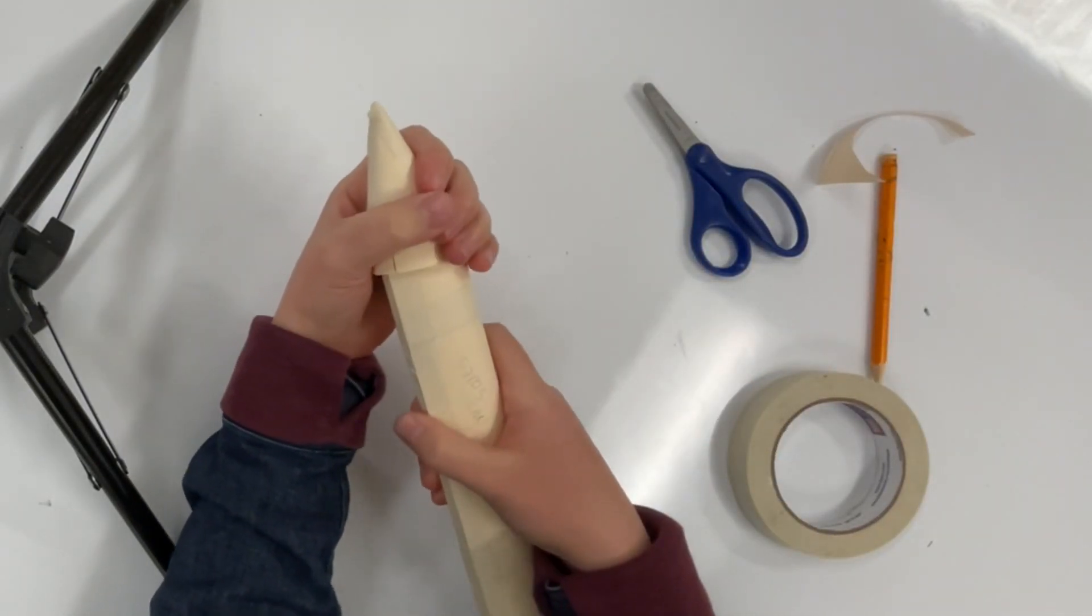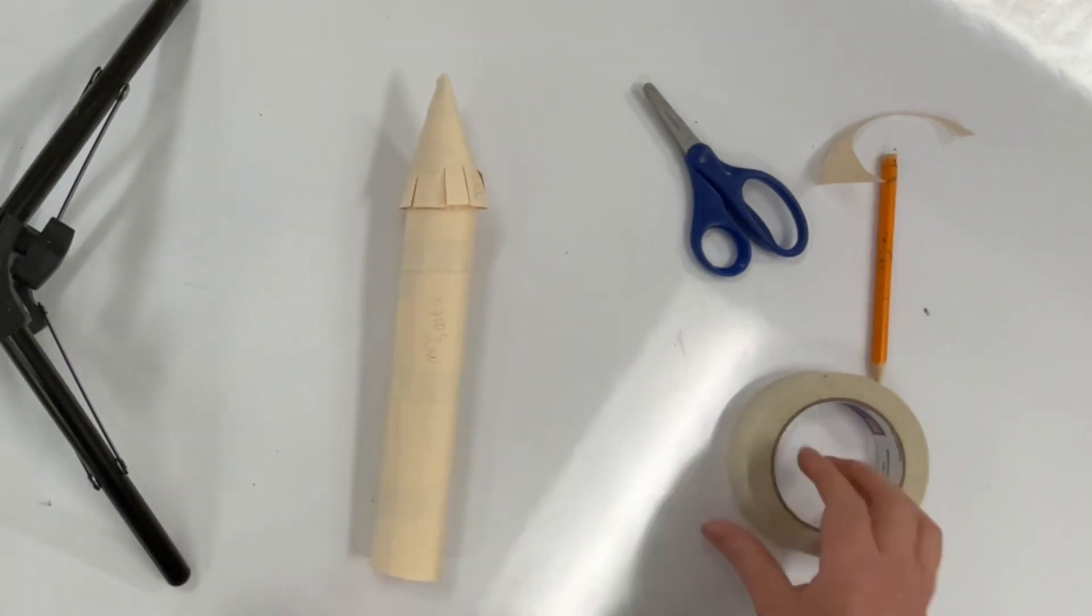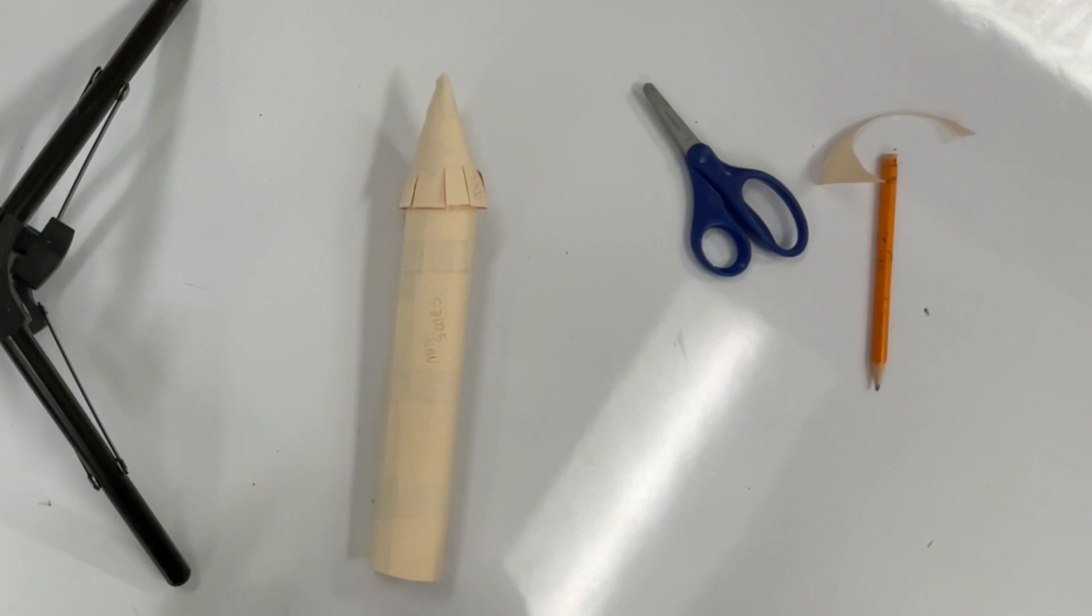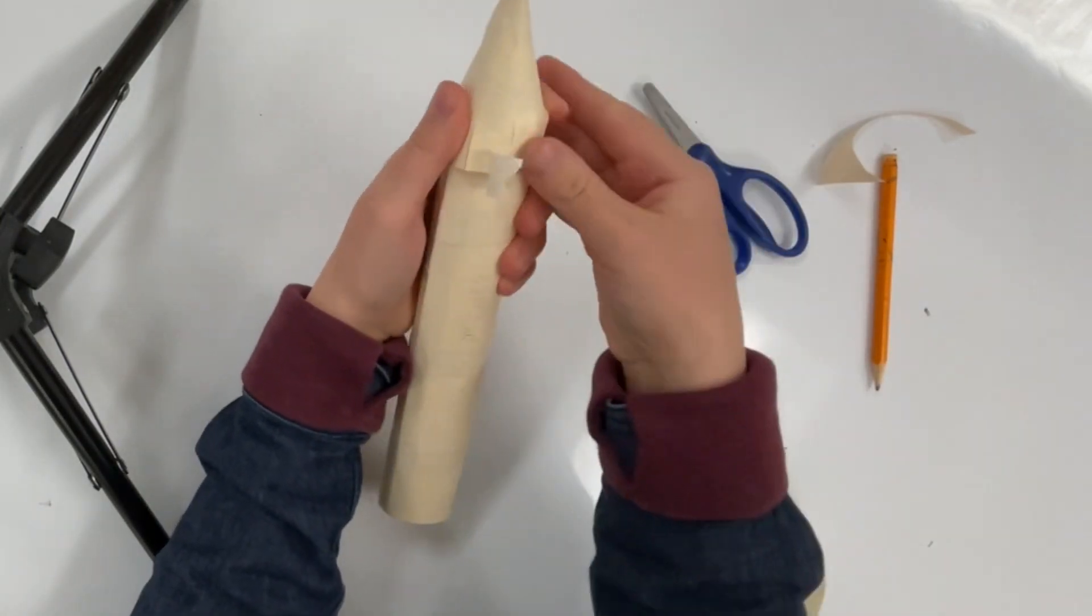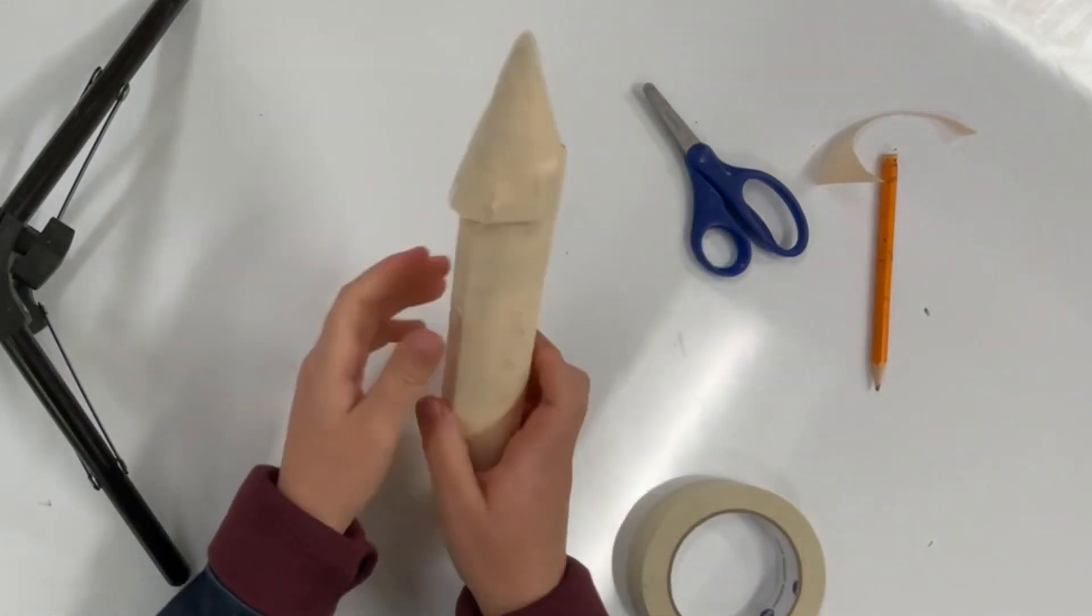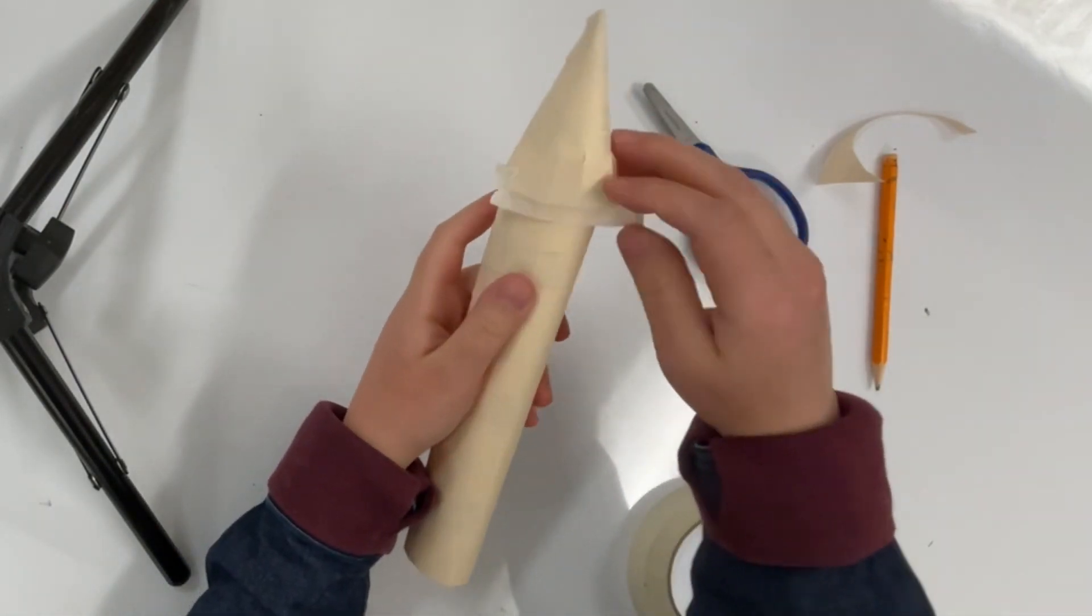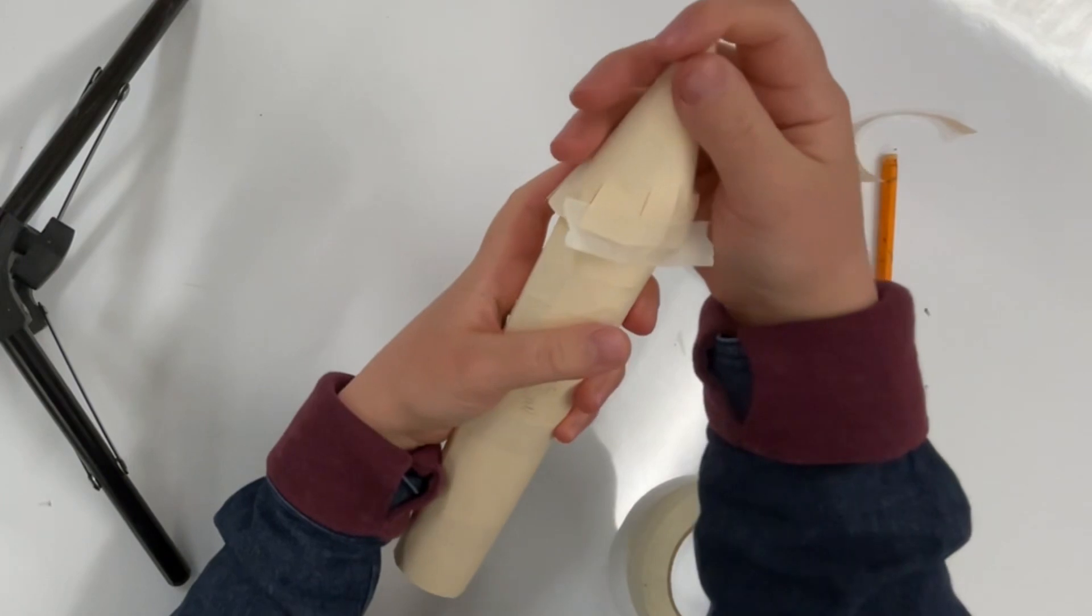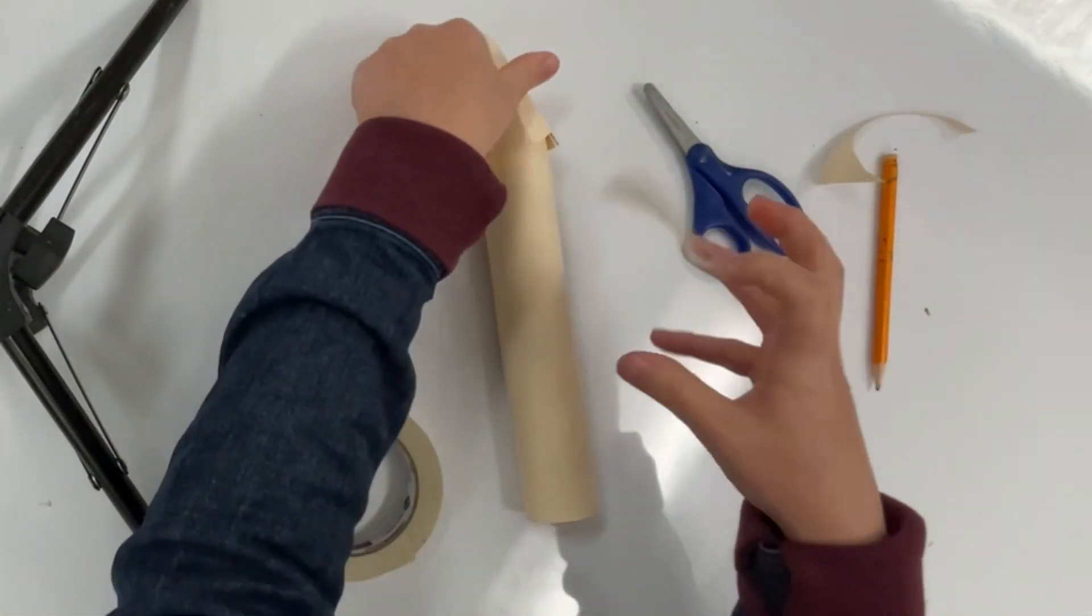You can kind of squish it to make it fit really well and make sure it's nice and straight—you don't want it to be crooked on top of the tube. So I'm grabbing my tape, putting it on to hold everything down. I have to adjust it a little bit because it is a little crooked, so you might have to do some adjusting.